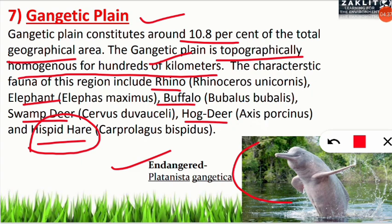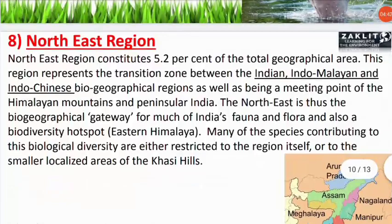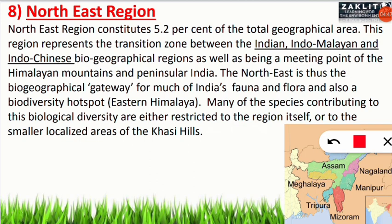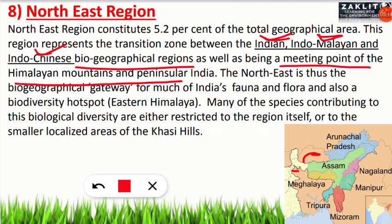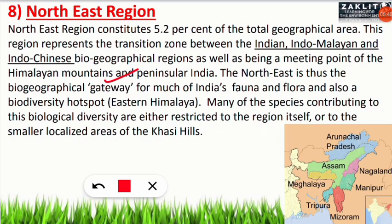The northeastern region constitutes 5.2% of India's total geographical area. It is the transition zone between Indian, Indo-Malayan, and Indo-Chinese biogeographical regions. It is also the meeting point of the Himalayan mountains and peninsular India. The northeast is the biogeographic gateway for much of India's fauna and flora and is also a biodiversity hotspot — the Eastern Himalaya region. Many species contributing to biological diversity are either endemic to the region or restricted to small localized areas such as the Khasi Hills.